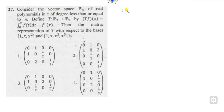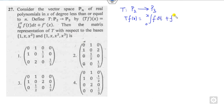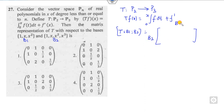The next question: a mapping T from P2 to P3 is defined as T(f) = integral of f dt plus f'. You need to find the matrix of T with respect to basis B1 and basis B2. B1 has 3 elements, B2 has 4 elements, so the matrix is 4×3. Two options are cancelled immediately — no need to think about those.